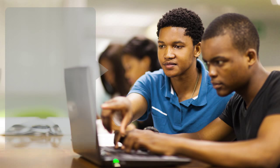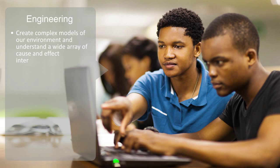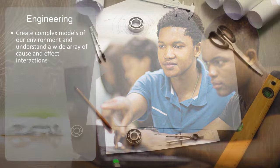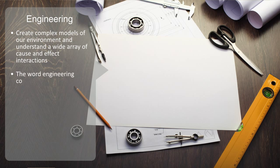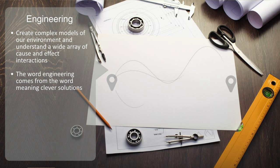With this advanced cognitive capacity, we are able to create complex models of our environment, understand a wide array of cause and effect interactions, conceive of desired optimal future states, and use logic to try and achieve these through a sequence of strategic actions. This is the very abstract foundation of technology and engineering. The word engineering comes from the word meaning clever solution. In its essence, it is about developing systematic methods for solving some constraint. Technology is the embodiment of this systematic solution within a physical form that can then perform the set of stages required to resolve the constraints whenever needed.